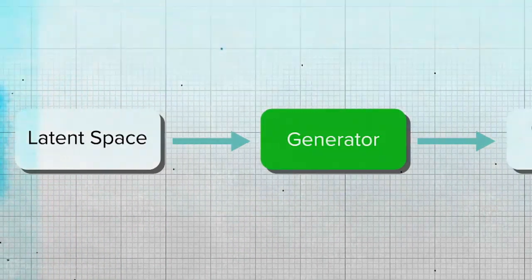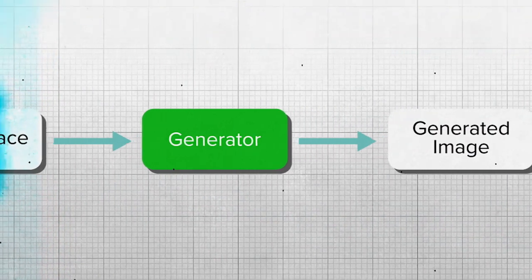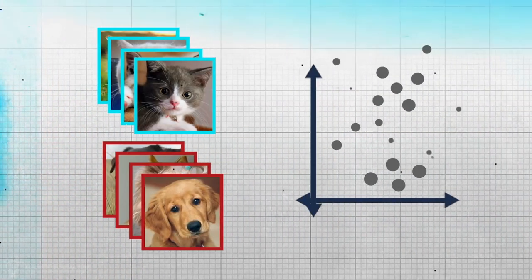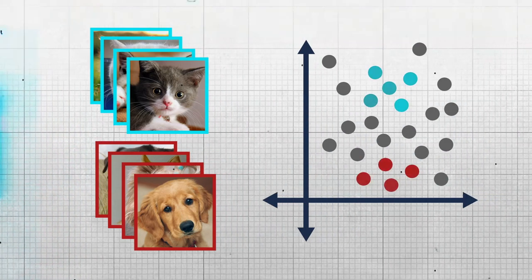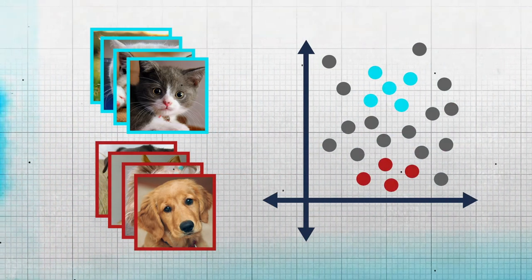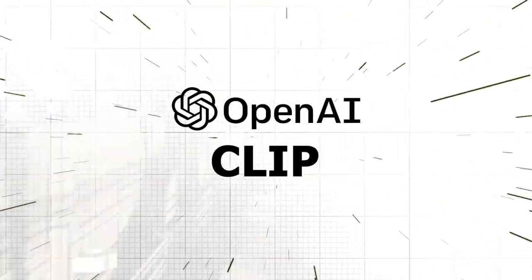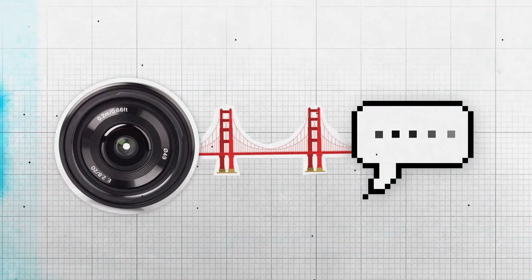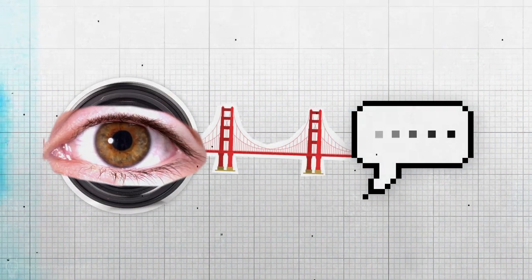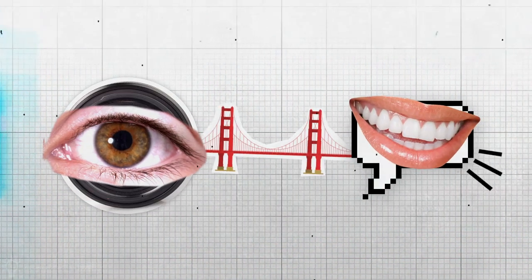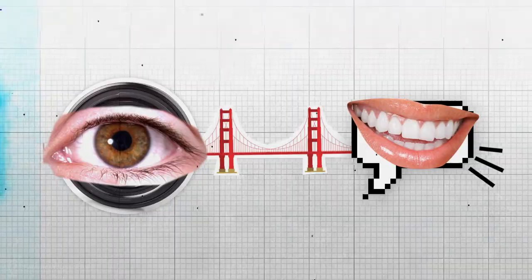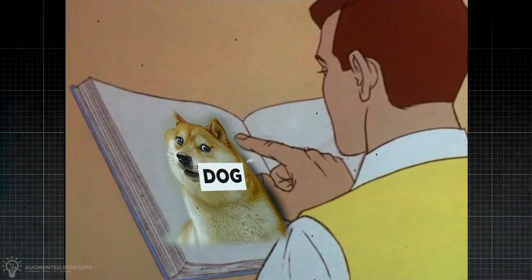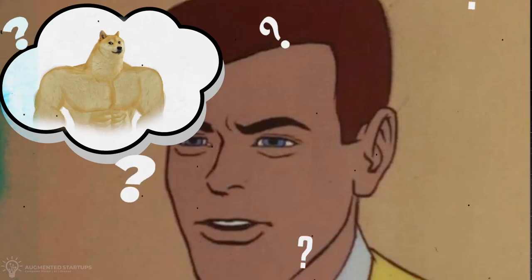To properly leverage the generator network, we need to be able to guide the generation process effectively. So when we want to generate an image of a cat, the decoder in the generator network knows where in the latent space it needs to sample from. This is where OpenAI's CLIP revolutionized the world of generative artworks. Simply put, CLIP can be thought of as a bridge between computer vision and natural language processing. Computer vision models aim to understand and see things like humans, and similarly, NLP models try to understand natural language in a manner similar to humans. But the two domains are intertwined — when we see a dog, we can label it as a dog, and when we read the word dog, the image of a dog pops up in our head.